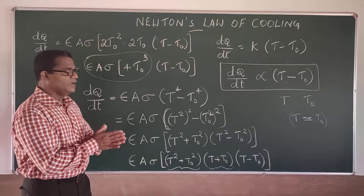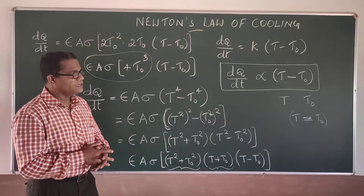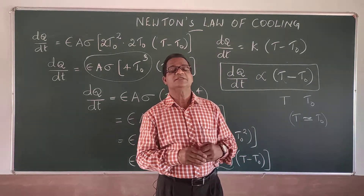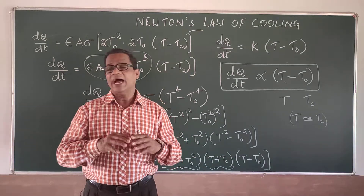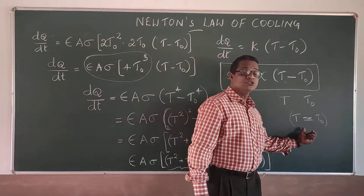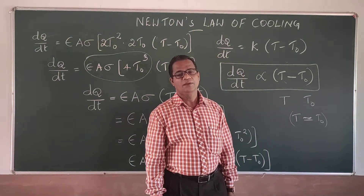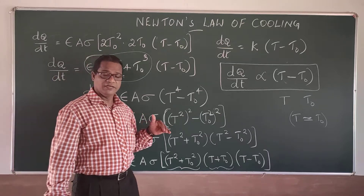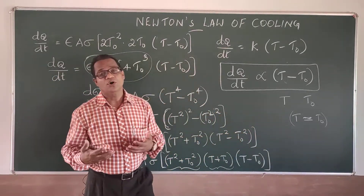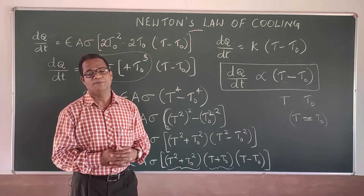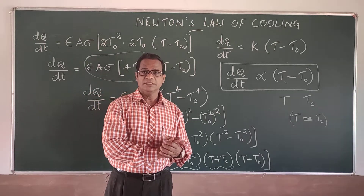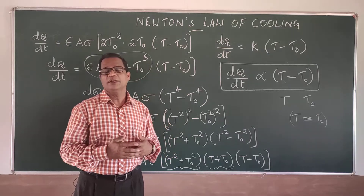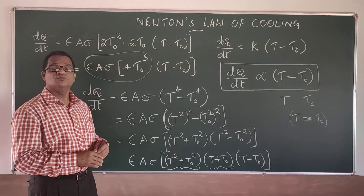Newton's law of cooling states that the rate of cooling of a body is directly proportional to the difference in temperature between the body and its surroundings, provided that the difference is very small. This is how we apply Stefan-Boltzmann's law to derive Newton's law of cooling. This is an approximate method — the actual method is an integration method, which we are not discussing here.